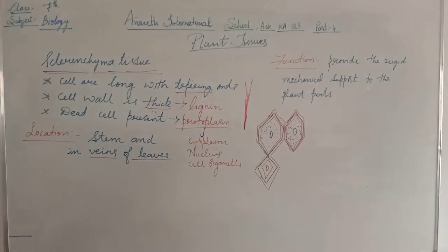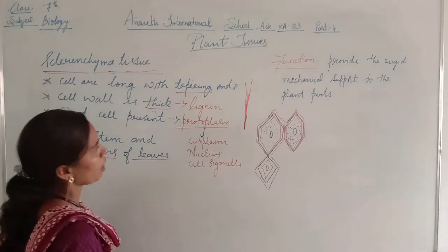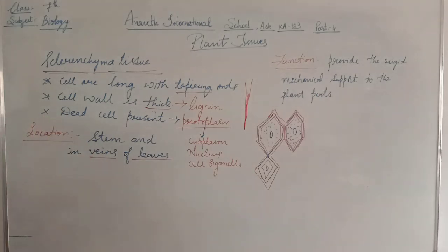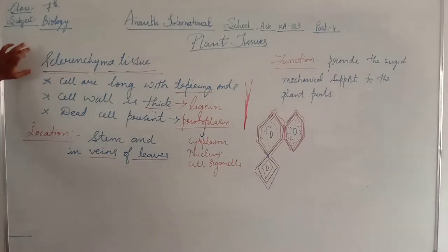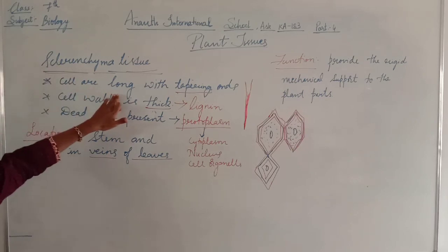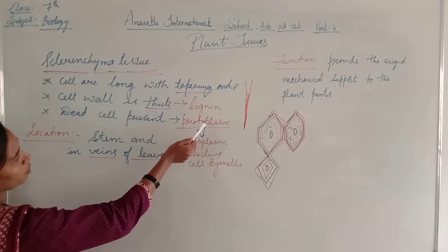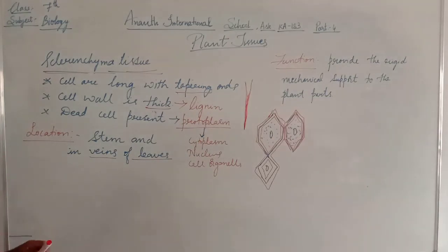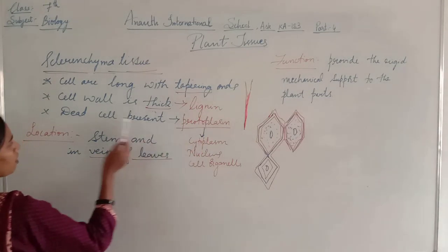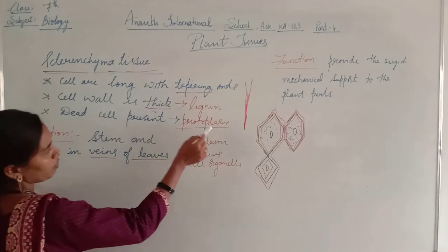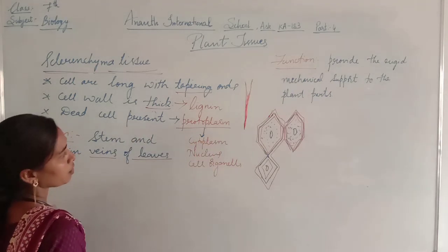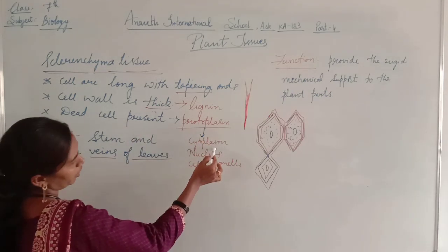To summarize sclerenchyma tissue: it is a supporting tissue where the cells have tapering ends and the cell wall is thick due to the presence of lignin. Dead cells are present, and protoplasm is absent. What is present in protoplasm? Cytoplasm and the nucleus. Since protoplasm is absent, dead cells have no cell activity.